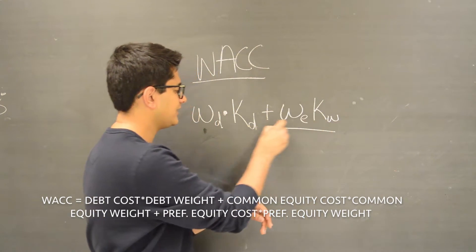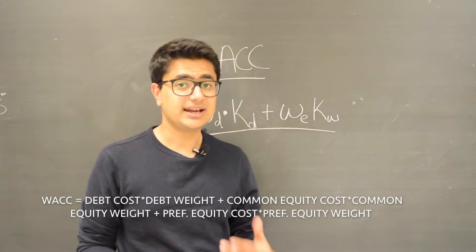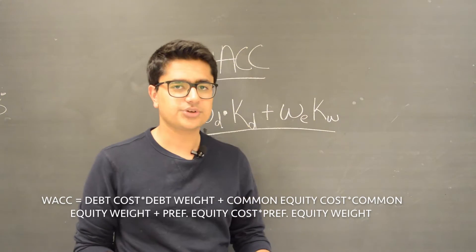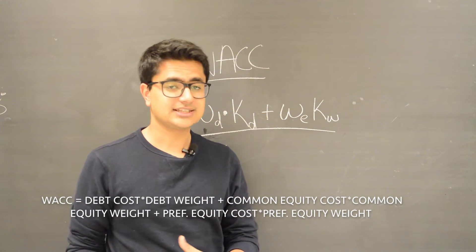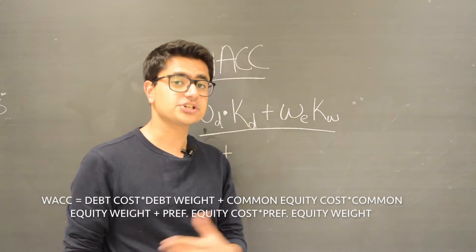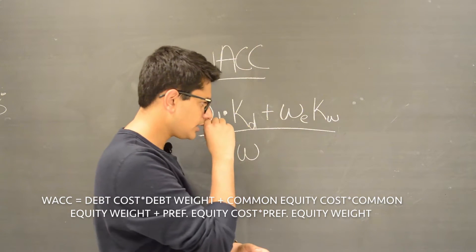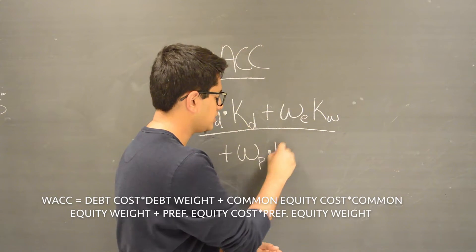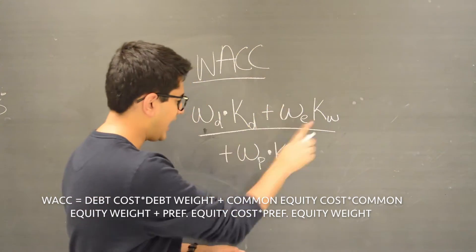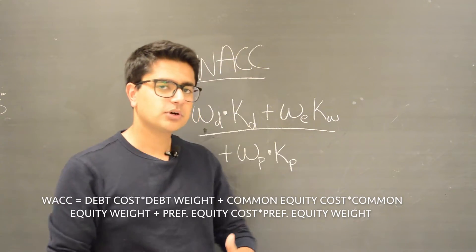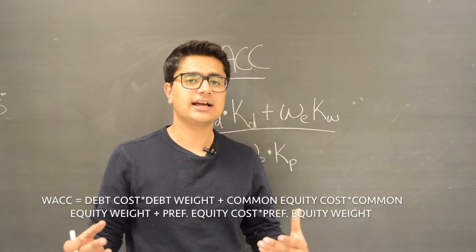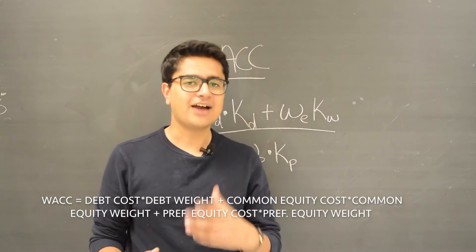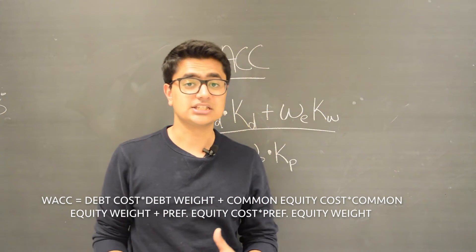This is the underlying formula for the weighted average cost of capital, but there's one more component. If a company has also issued preferred shares — non-common shares known as preferred shares — you also add the weight of preferred shares multiplied by the cost of preferred shares. Adding all three components together gives a number that provides an overarching picture of the weighted average cost of capital for the company.